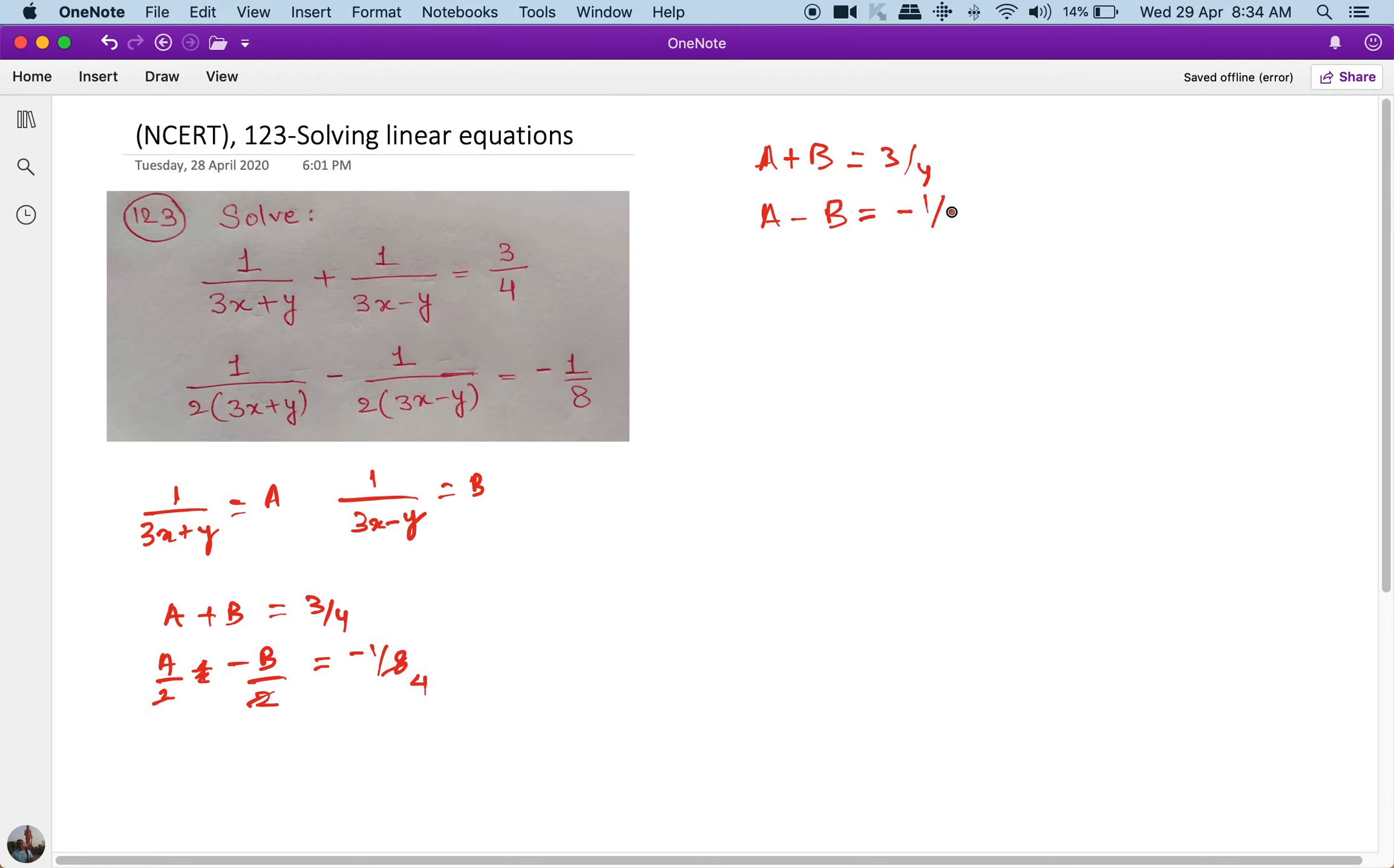Now let's add the two equations. On adding the two equations, I get 2A is equal to 2 upon 4, and A becomes equal to 1 upon 4.